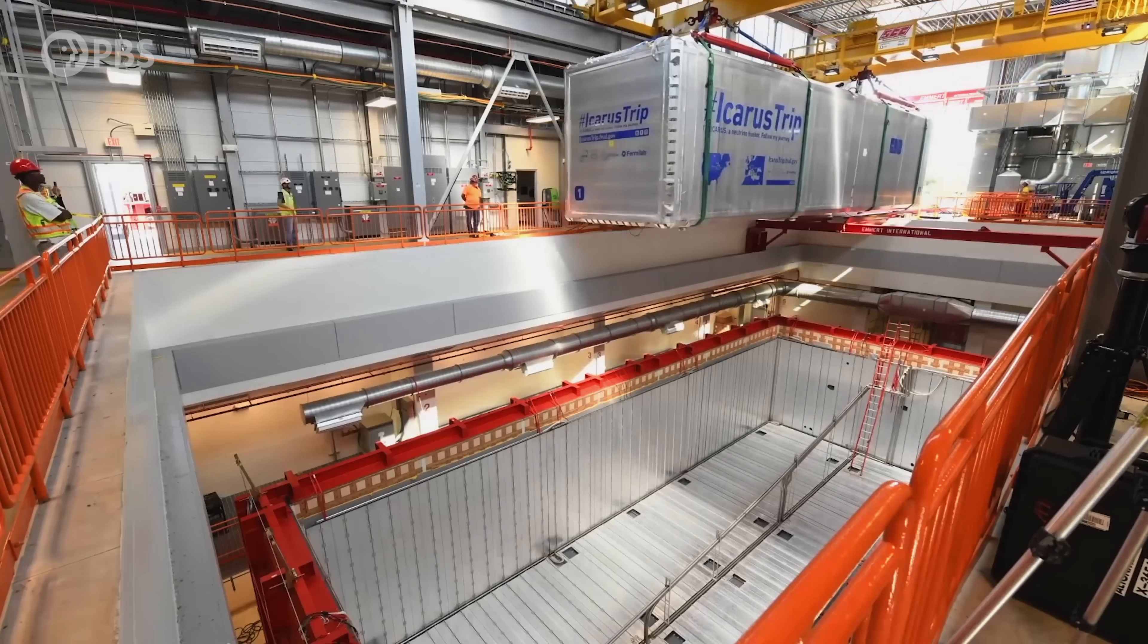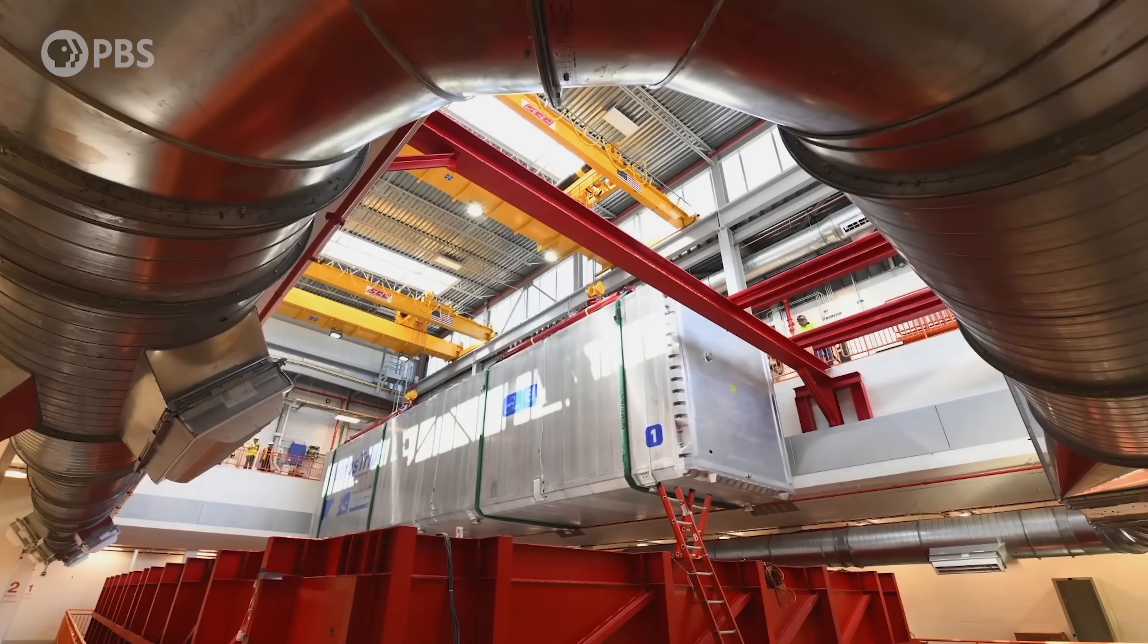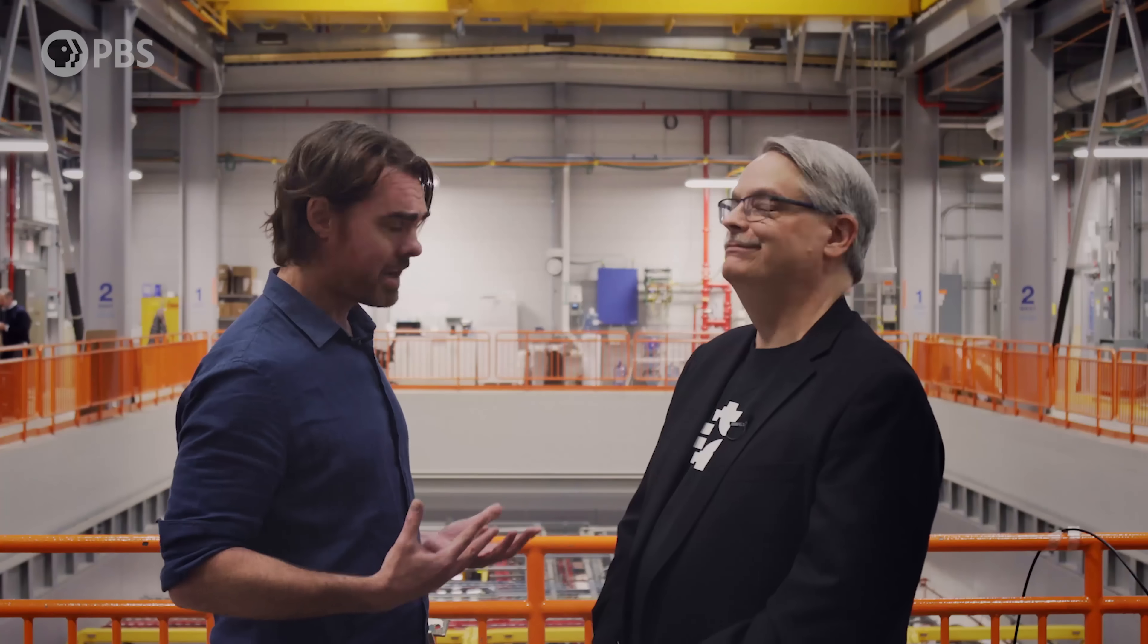Down here we have the Icarus neutrino detector. And as awesome a piece of science equipment as this looks, it's definitely not five light years of lead. How is this supposed to stop a neutrino? Well, it's entirely probabilistic.